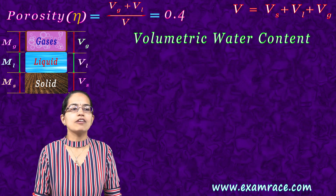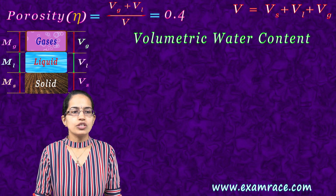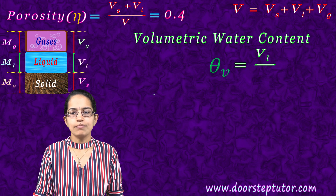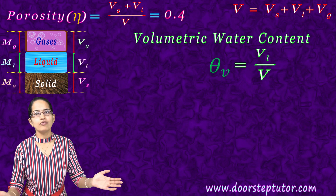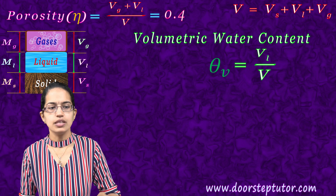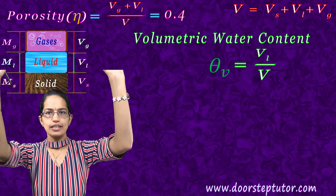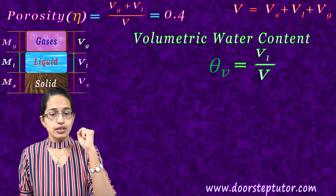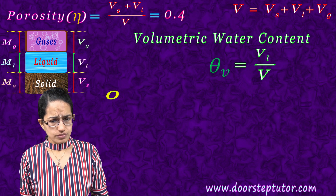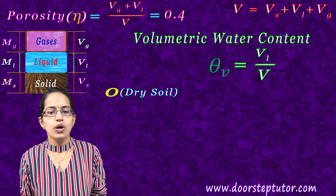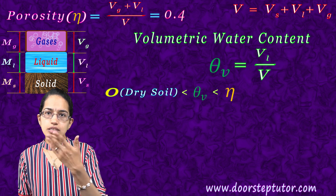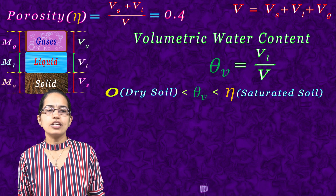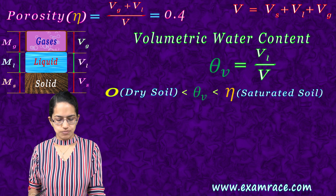The next is understanding the volumetric water content, which is defined by theta V (θV). This is the ratio of the volume of the water divided by the total volume, or the volume of water per bulk volume of the soil sample. For the whole soil sample I take the volume and the proportion of water present in that soil sample. This varies from 0 in a dry soil to N, which is the saturated amount where you have the highest porosity. That's the range of the volumetric water content.